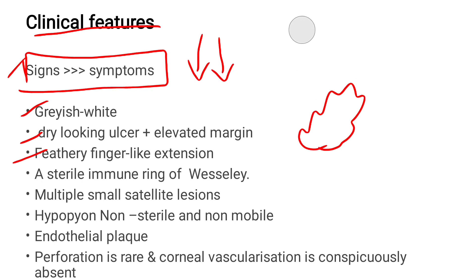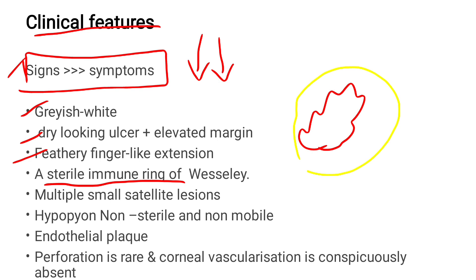A sterile immune ring called the Wessely ring can be seen. It is formed by a complex antigen-antibody reaction and appears as a yellow demarcation ring. Additionally, multiple small satellite lesions can be seen around the ulcer.